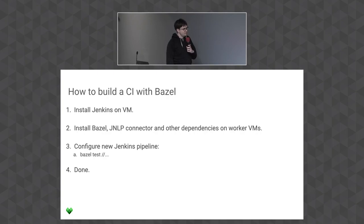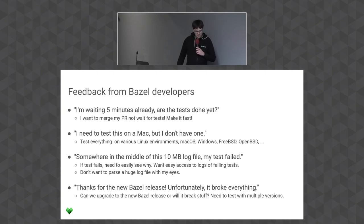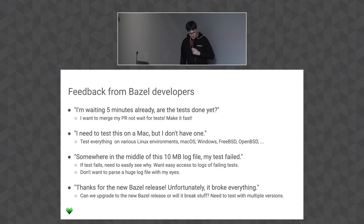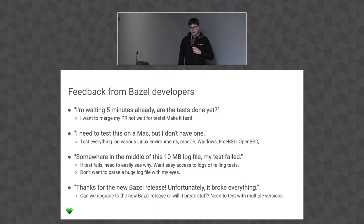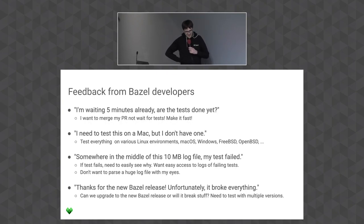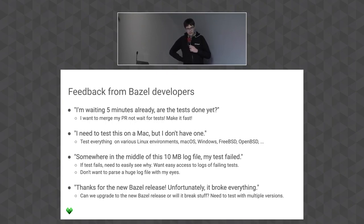This was Bazel CI in the beginning and it was pretty okay, as far as Jenkins can be okay. But then we got feedback: 'Hey Phil, here's a P1 bug — I'm waiting five minutes for my pre-submit, the tests are still running, is this an outage? I want to merge my pull request.' Also: 'I made a change that breaks Mac but I don't have a Mac, how do I test that?' I first gave the answer 'well, get a Mac' but that didn't scale too well, and then you have Windows, maybe even FreeBSD.